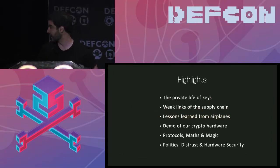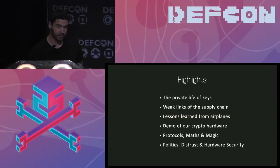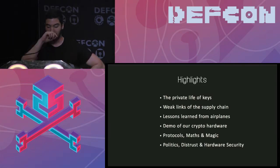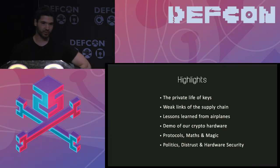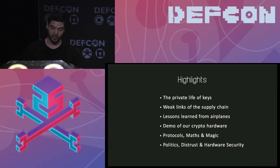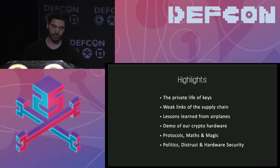The highlights of this talk: we start by discussing the private life of keys, then cover weak links in the supply chain, lessons learned from airplanes, how to transfer those lessons to crypto hardware, a demo with our architecture, the protocols with some math, and finally politics around how we can deploy this crypto hardware.